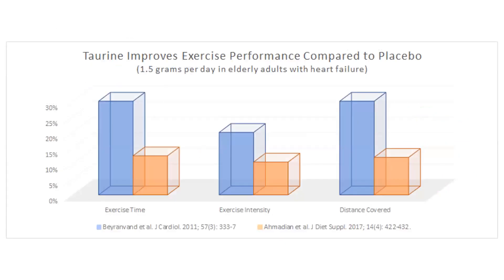Those other two studies involved elderly folk with heart disease. Over just two weeks of supplementing with one and a half grams of taurine per day, the participants improved their exercise time by 13 to 30%, exercise intensity by 11 to 20%, and the distance covered during exercise by 12 to 30% compared to a placebo.